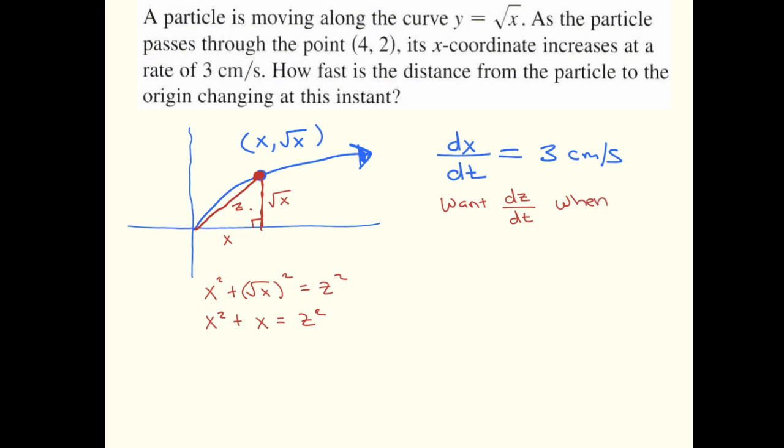And let's just go back to what we want in calculus terms. We want dz/dt at the instant that the particle passes through the point (4, 2). So that's another way of just saying when our coordinates are (4, 2). Going back to our equation here, we want to take the derivative of both sides with respect to time. So the derivative of x squared is 2x times dx/dt plus the derivative of x is just 1 times dx/dt, and that equals 2z times dz/dt.